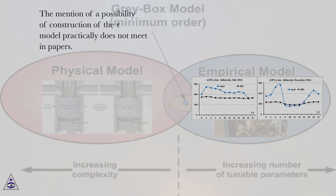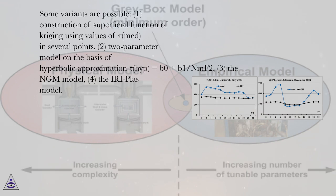The mention of a possibility of construction of the tau model practically does not meet in papers. Some variants are possible: 1, construction of superficial function of crudging using values of tau MED in several points; 2, 2-parameter model on the basis of hyperbolic approximation tau HIP equals B0 plus B1 slash NMF2; 3, the NGM model; 4, the ERI-PLOS model.